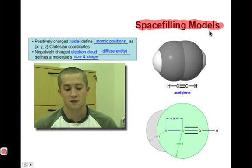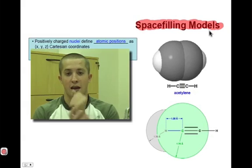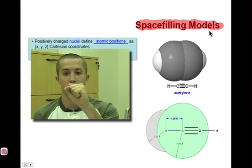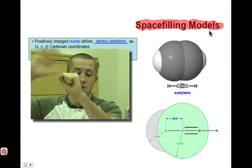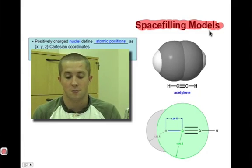The best way to understand a space filling model is to think of an atom's nucleus as representing its point in space, and that atom's electron cloud that surrounds it represents the size and shape of that atom. That's what a space filling model represents.